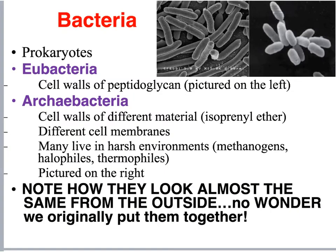There are two different kingdoms of bacteria. Bacteria are prokaryotes, meaning they are single-celled and don't have membrane-bound organelles. Eubacteria are the ones we interact with on a daily basis in our environment and ecosystem — on our desks, on our skin, and in our intestines in the form of E. coli.